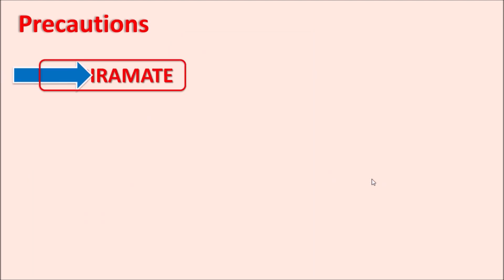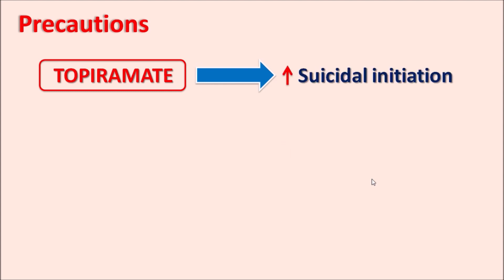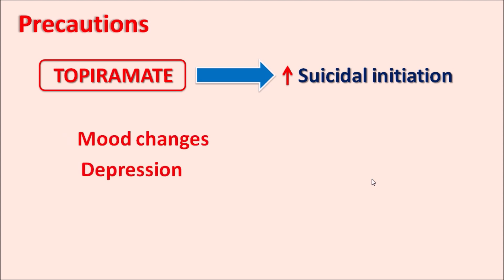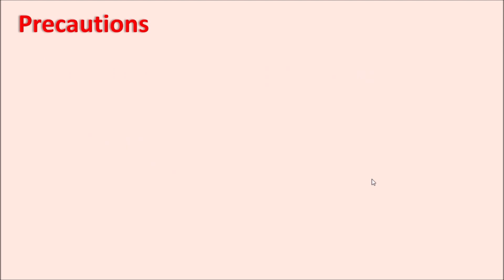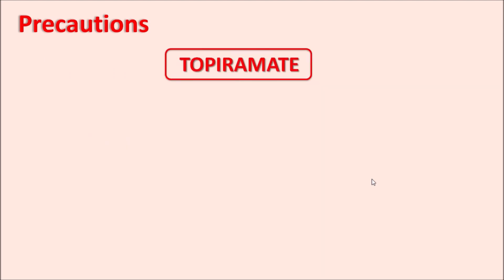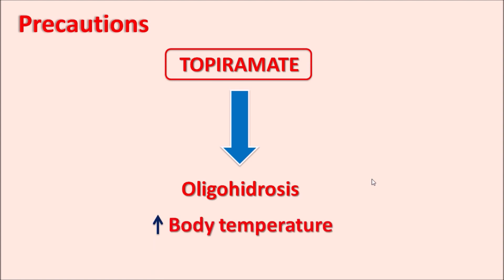Another important precaution is that this drug can increase suicidal ideation. This drug can produce psychomotor disturbances resulting in mood changes and depression, which may lead to suicidal ideation in patients. When used in pediatric patients, it can produce oligohydrosis — decreased sweating — which increases body temperature. Any rise in body temperature with use of this drug should be closely monitored, as it may produce confusion, nausea, and mental disturbances in patients.